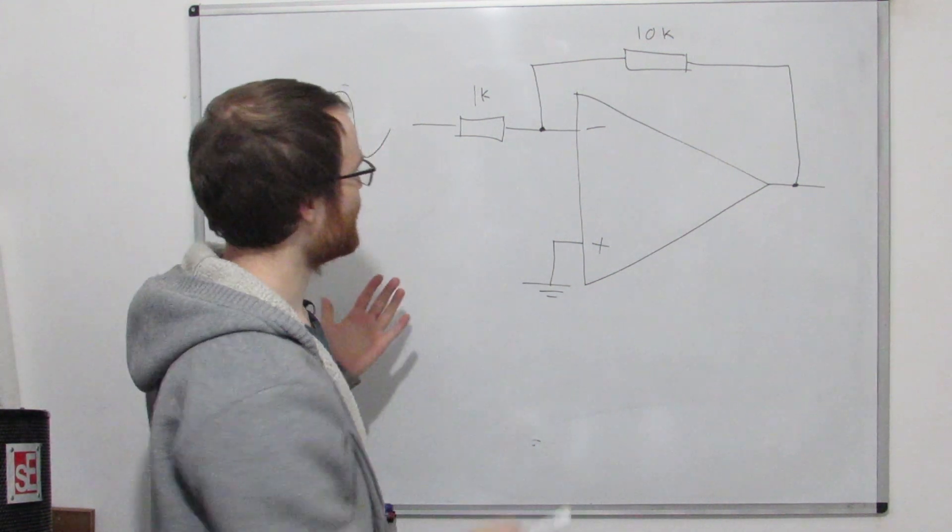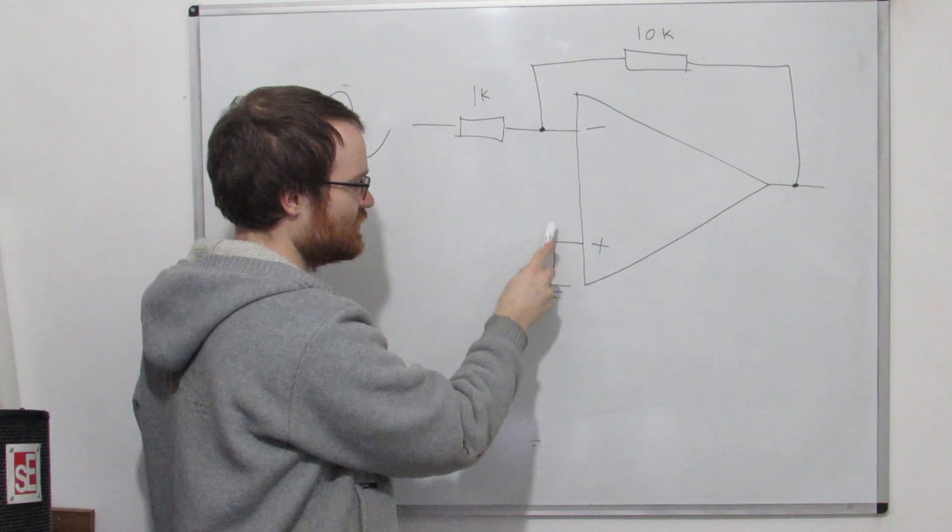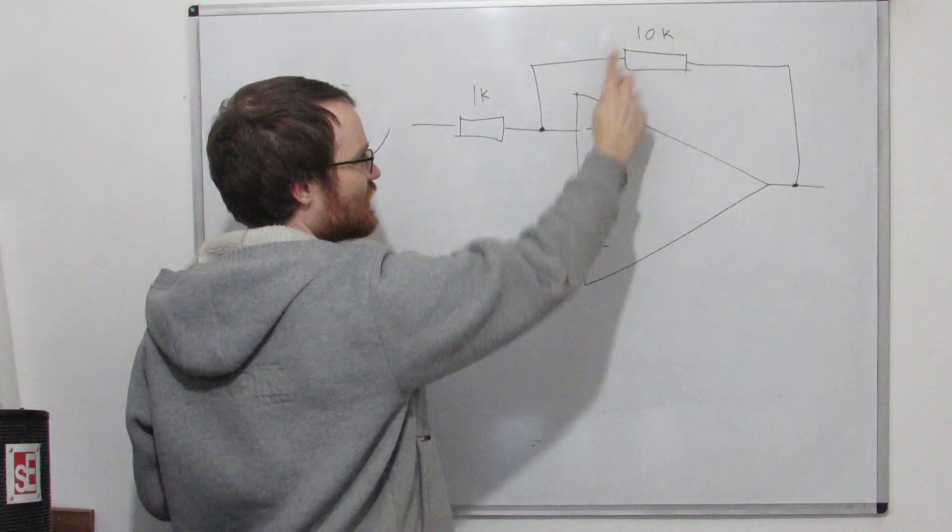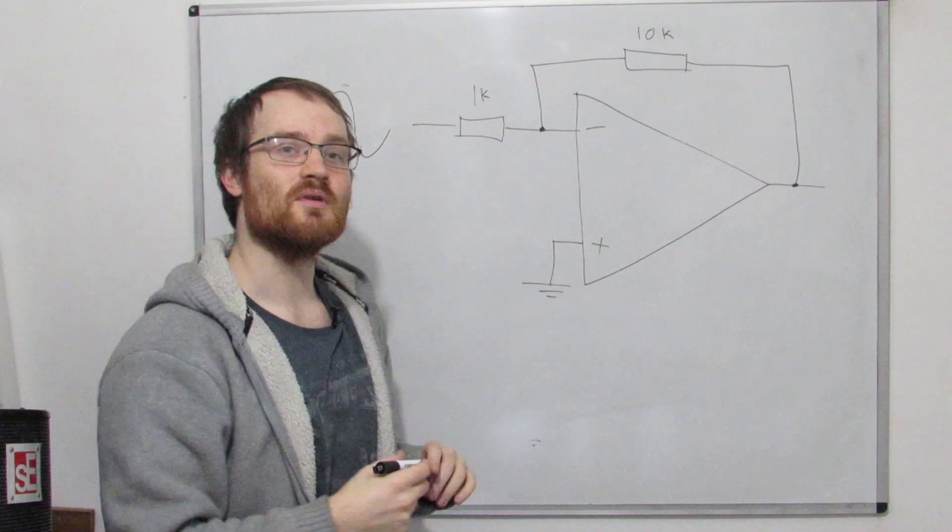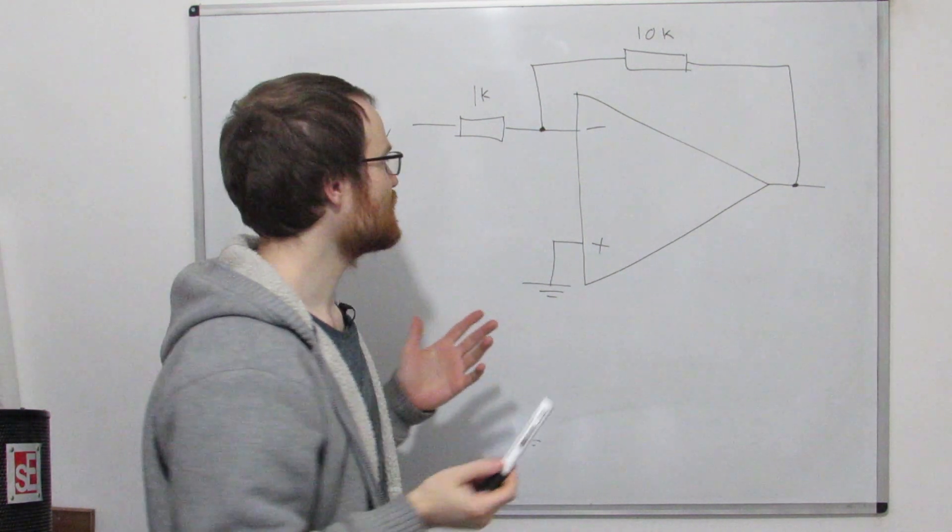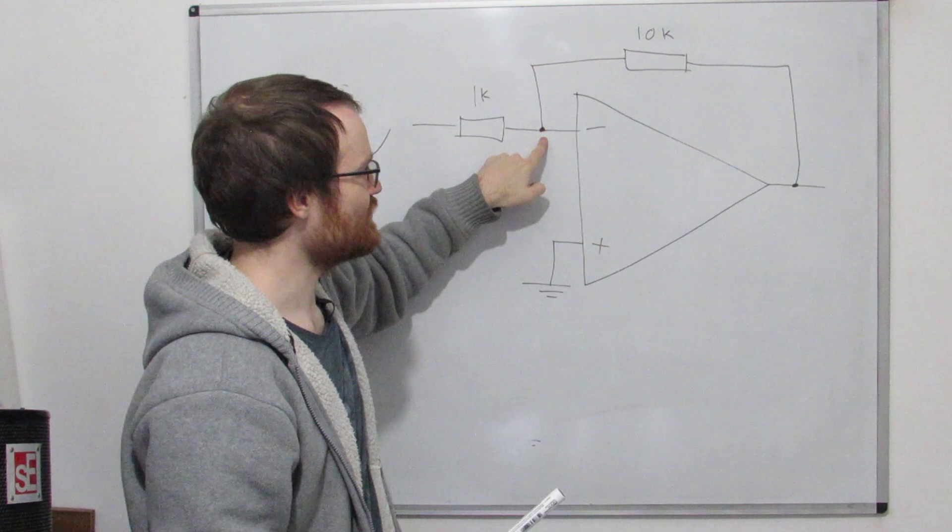So what does that do with our circuit? So if we now think about this point here, if this point here is connected to ground, we've got negative feedback. So remember our rule number one, the op-amp will now try and make these two inputs the same. So that means that it's going to try and make this input ground.